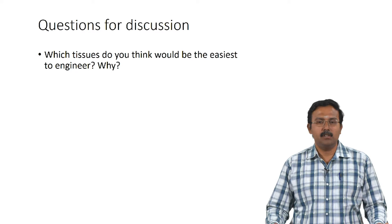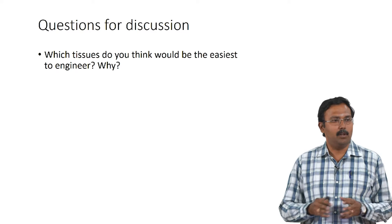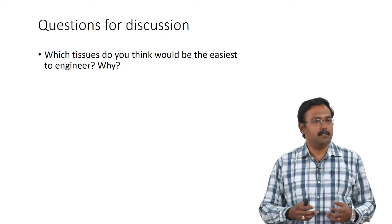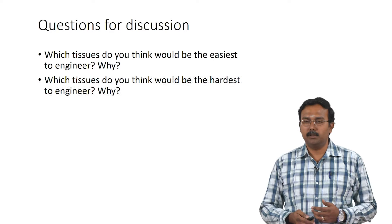What about bones? Bones are also reasonably easier to regenerate compared to most other tissues. So what do you think is the common factor between all these tissues? They are basically just barriers or supports — they are not functional tissues, right. Skin is just a barrier, bone is just a supportive tissue, cartilage is also a supportive tissue. The function itself is simpler compared to other more complicated tissues.